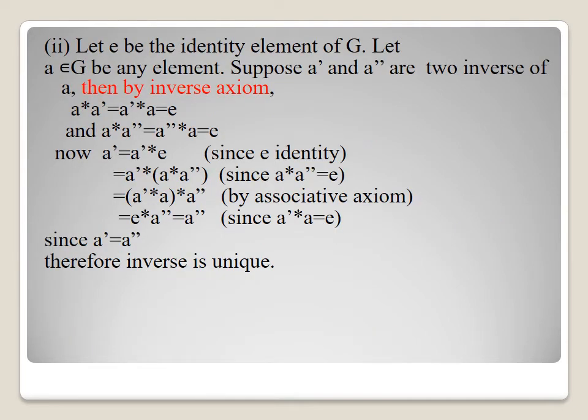Second property: let e be the identity element of G and let a in G be any element. Suppose a' and a'' are two inverses of a. By the inverse axiom, a star a' equals a' star a equals e, and a star a'' equals a'' star a equals e. Now a' equals a' star e equals a' star (a star a'') equals (a' star a) star a'' by associativity, which equals e star a'' equals a''. So a' equals a'', therefore the inverse is unique.